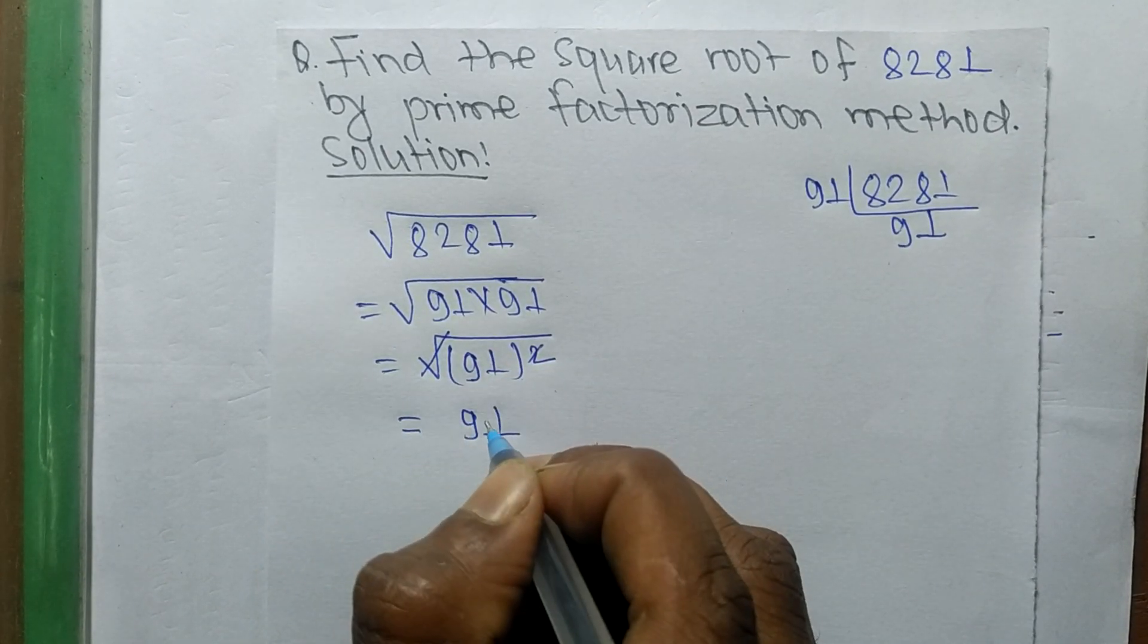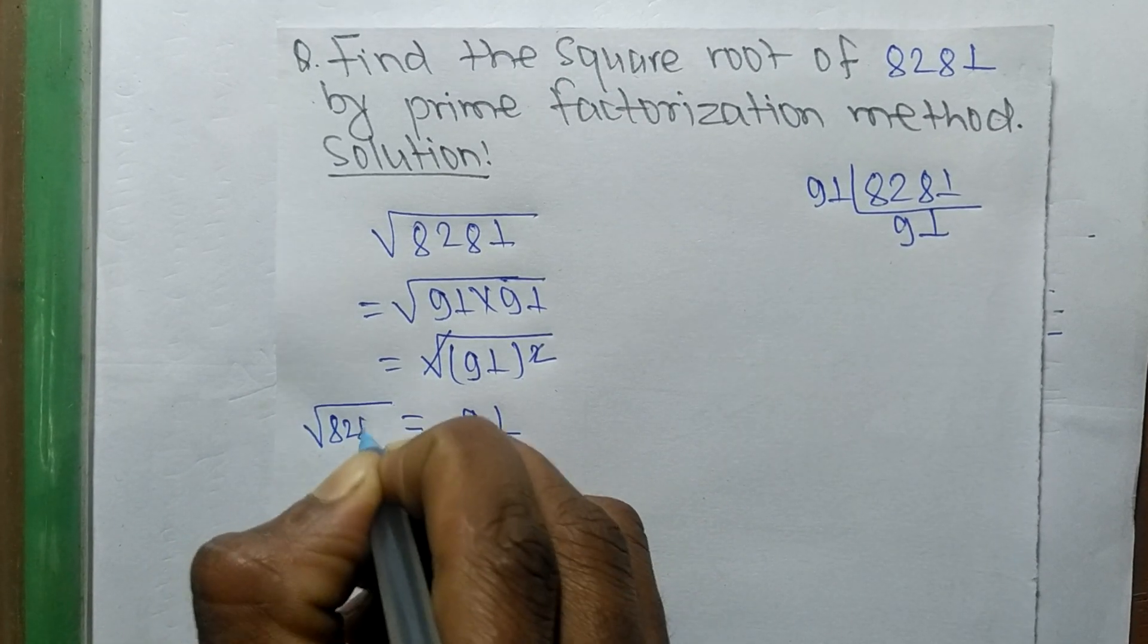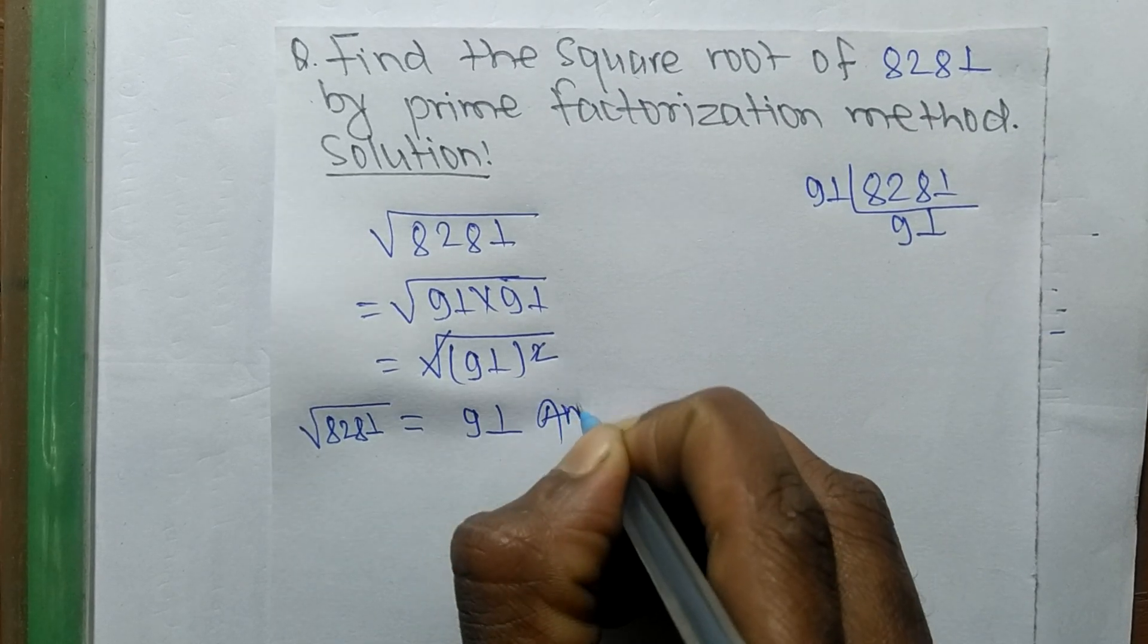The number is 91, so the square root of 8281 is equal to 91.